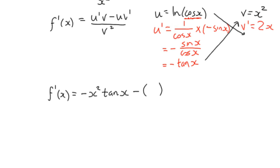So we've got 2x times the log of cos(x). If in doubt, keep everything in brackets. Divided by v squared. v is x squared, so it's x squared squared.